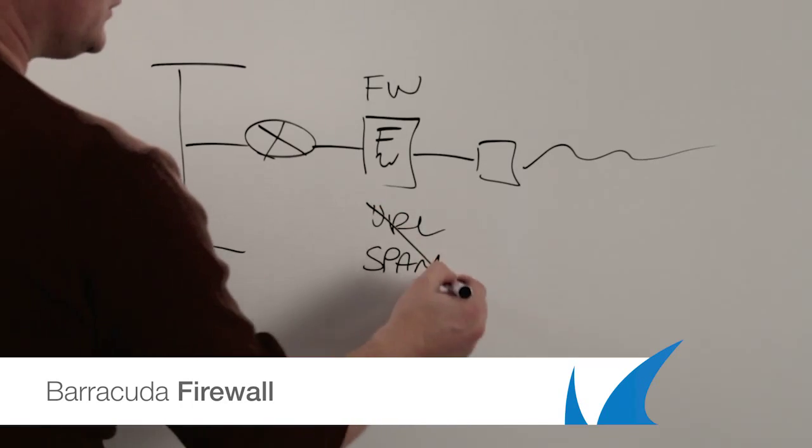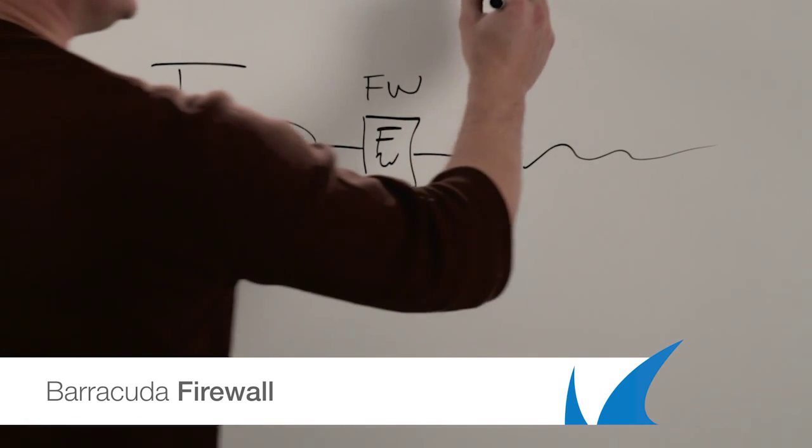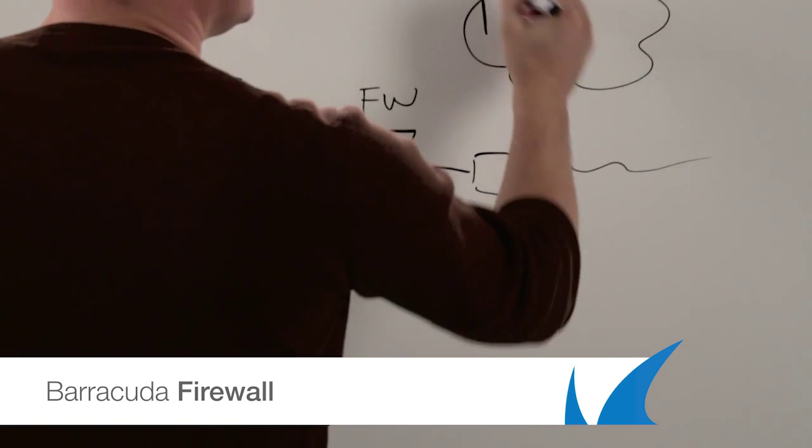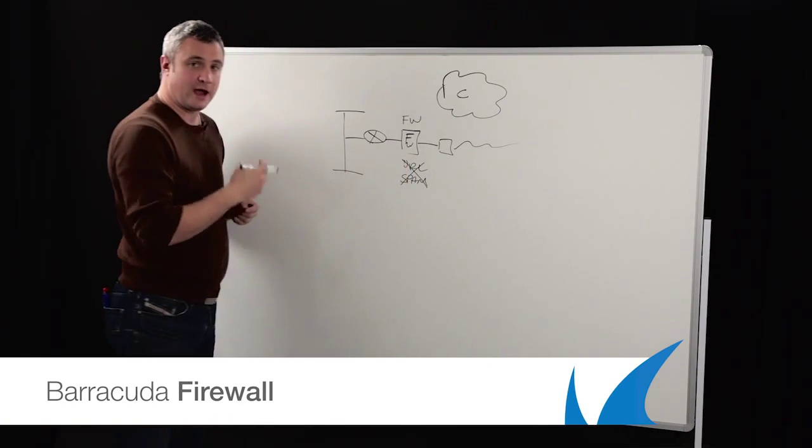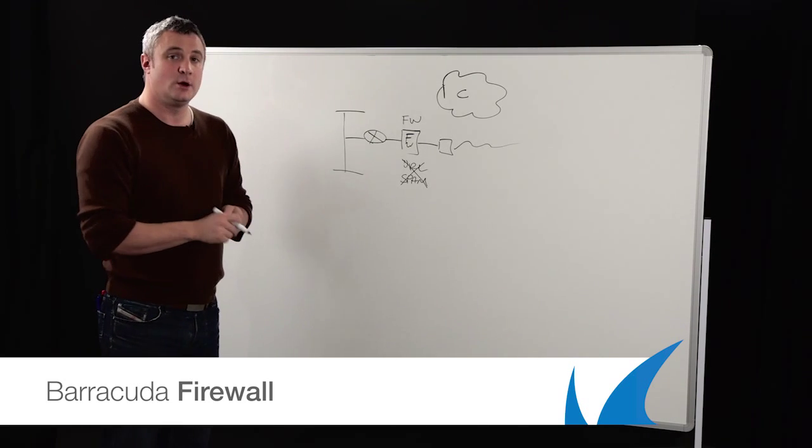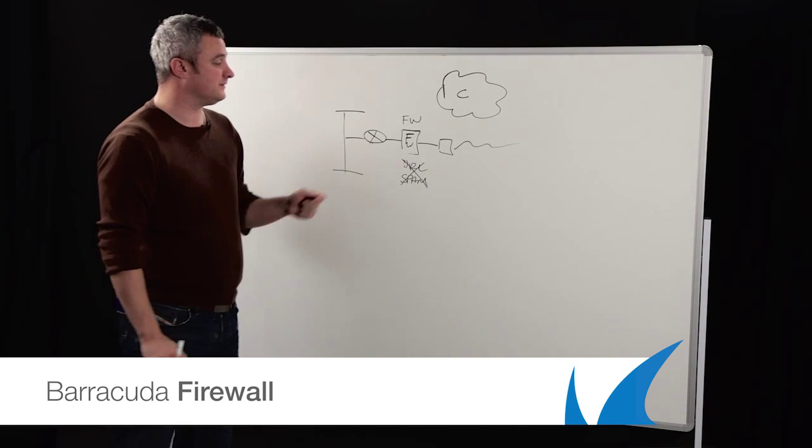What the Barracuda firewall can do is remove this part of the content and send this up to our cloud services. This means the Barracuda firewall is quite happily going across giving you next generation features firewalling, but not having to be bogged down with all the content filtering.